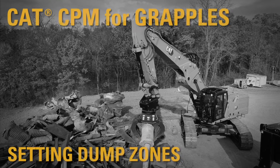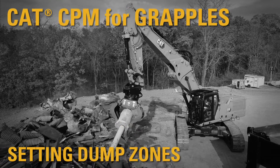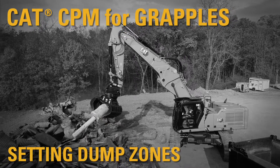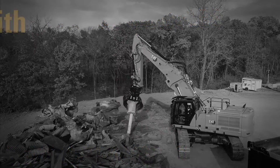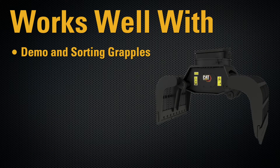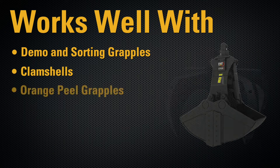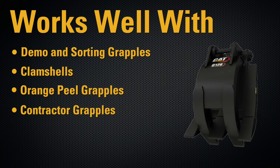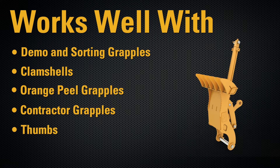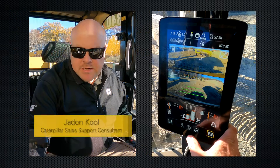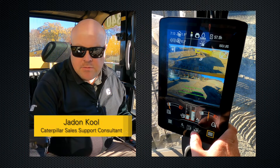The cap production measurement system, or CPM, now includes the option for grapples. Overall, the CPM for grapples works just the same as standard CPM for buckets. However, there are a few new options in the payload menu that you need to be aware of when running grapples.